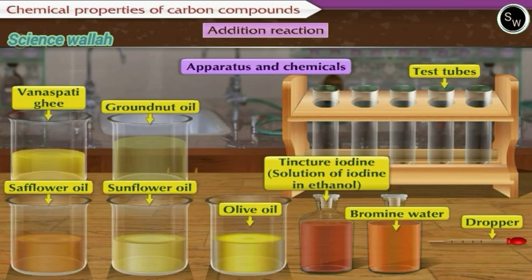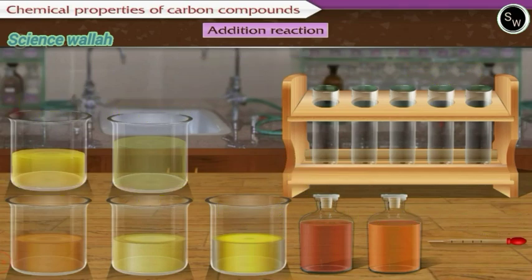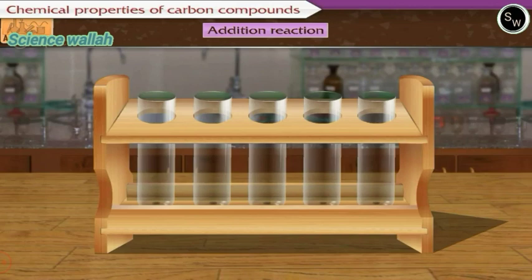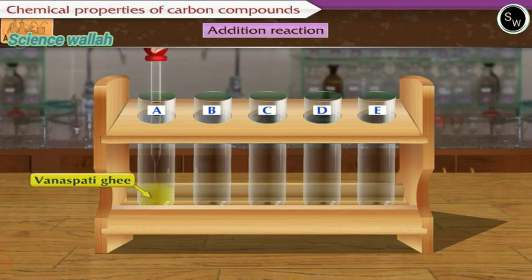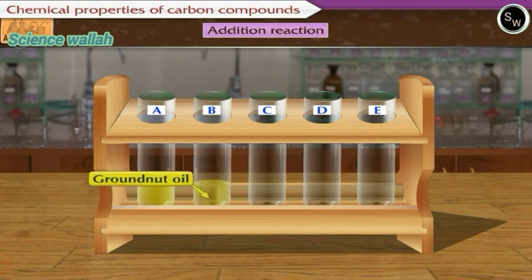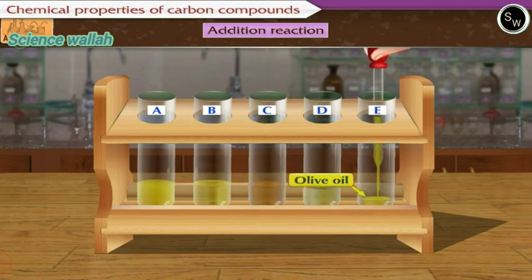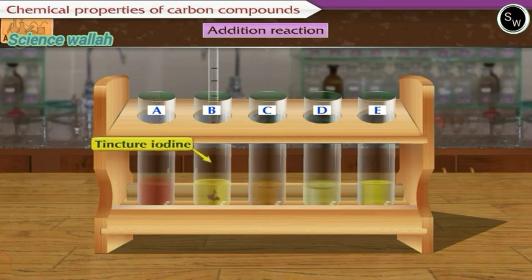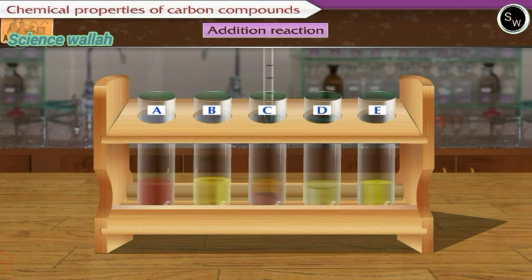Let us perform the activity. First, let us take five test tubes and label them as A, B, C, D, and E respectively. Let us take 2 ml vanaspati ghee in test tube A, and in the other test tubes take 2 ml groundnut oil, safflower oil, sunflower oil, and olive oil respectively. Now let us add four drops of tincture iodine in each of the five test tubes and observe.